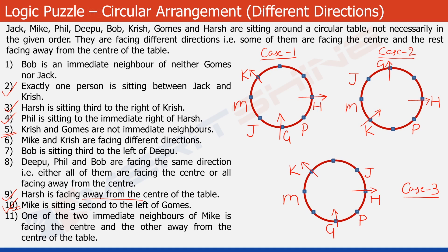Look at statement 6: Mike and Krish are facing different directions. In Case 1, Krish is facing outside, so Mike faces towards the centre. In Case 2, Krish faces towards the centre, so Mike faces outside. In Case 3, Krish is facing outside, so Mike faces the centre. At this point, Bob and Deepu are the two people not yet placed in any of the three structures, with two vacant positions remaining in each.